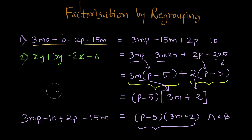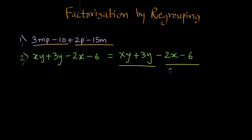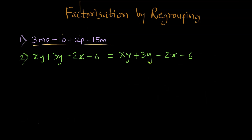Now let us look at the second example. Pause here and try to factorize the second expression yourself. The expression is XY plus 3Y minus 2X minus 6. Let us check whether we have any common factors in the first two terms — Y is a common factor in XY and 3Y. For the second set, 2X can be written as 2 times X and 6 can be written as 2 times 3, so 2 is a common factor. So without even regrouping, we can factorize this expression directly.